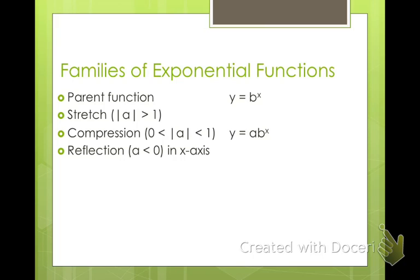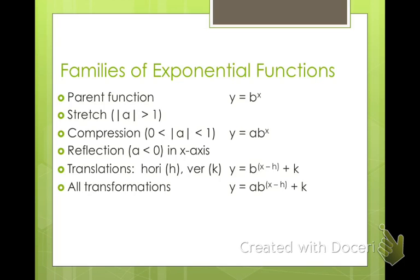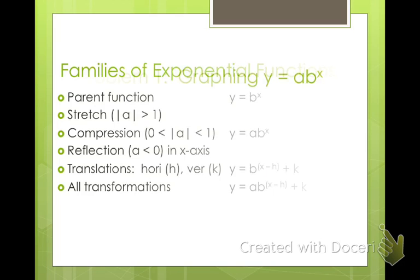So instead of growth going up, decay is going to be going down. Translations we have horizontal, that's your h and vertical is your k. So just like when we talked about other families of functions, we have h and k. And you can see x and h are still related and then k is over there kind of on its own. So the h is going to move it left and right. Opposite just like we talked about before, k is going to move it up and down. So if we put all the transformations together, we get y equals a times b raised to the x minus h plus k.